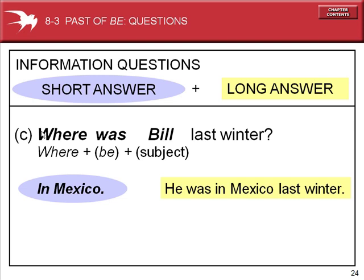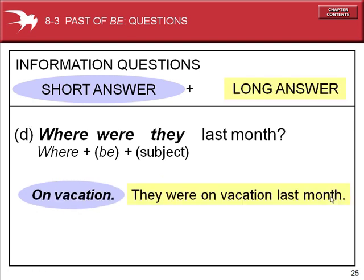For information questions: 'Where was Bill last winter?' The question word 'where' plus a form of the verb 'to be' and the subject. Short answer: 'In Mexico.' Long answer: 'He was in Mexico last winter.' Where were they last month? Short answer: 'On vacation.' Long answer: 'They were on vacation last month.'